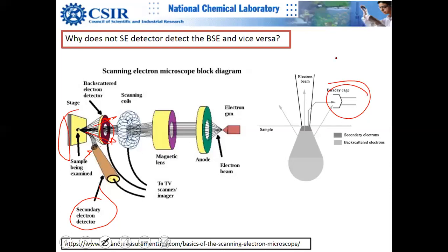The backscattered electron detector is symmetrically placed and does not give the same topographic advantage as the asymmetrically placed secondary electron detector.